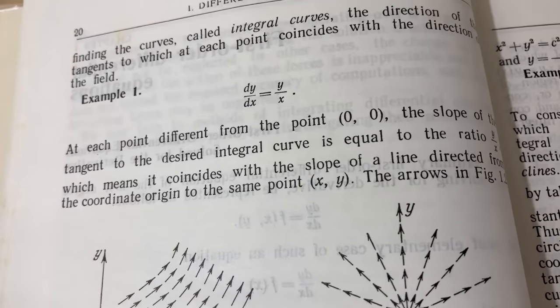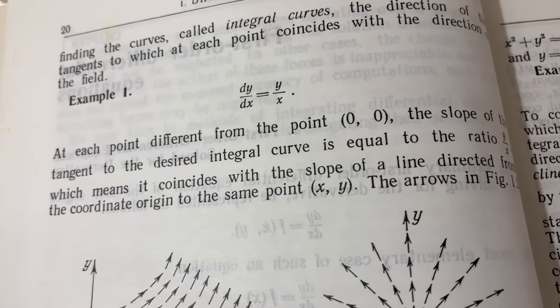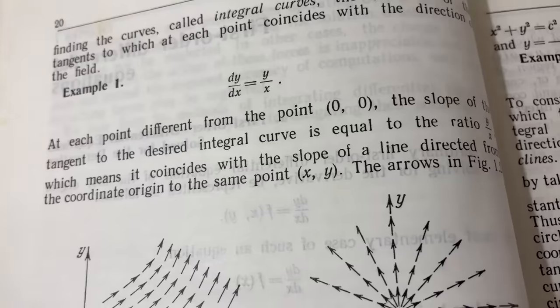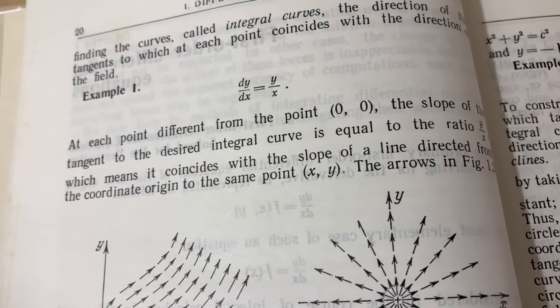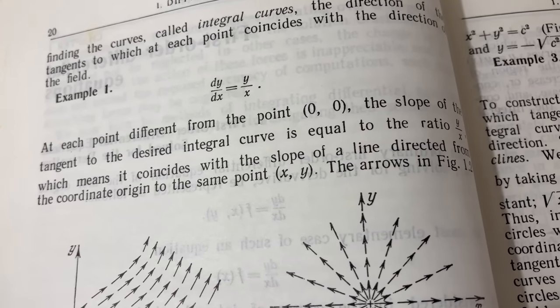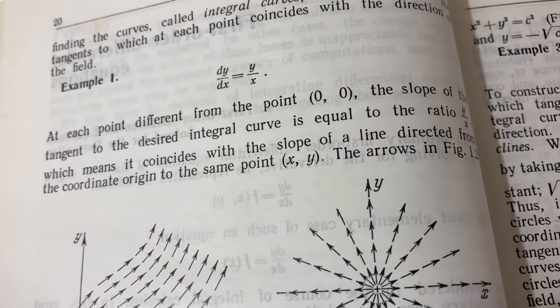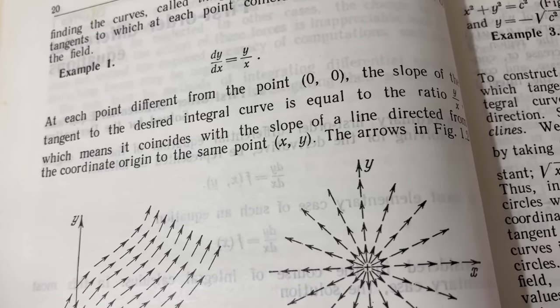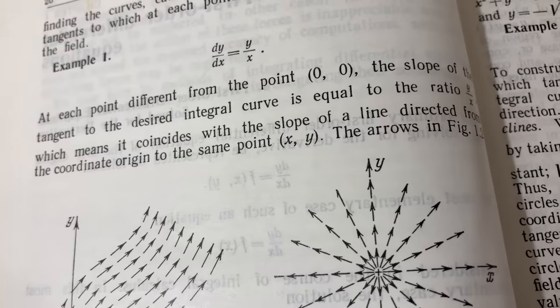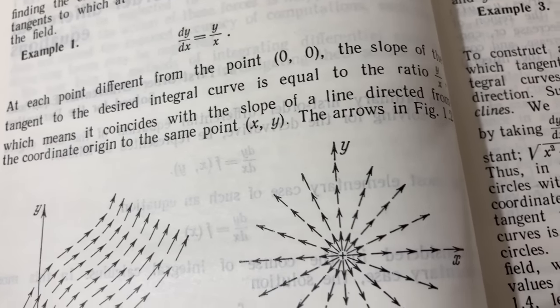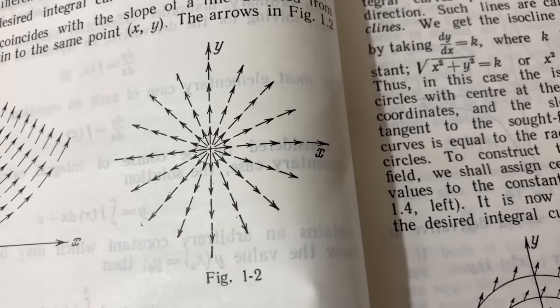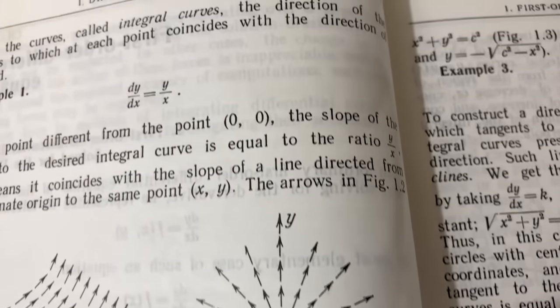Here's the first example in the actual book. They tell us that dy/dx is equal to y over x. It says that at each point different from (0, 0), the slope of the tangent line to the integral curve is the ratio y over x. Which basically means that these slopes are the same as the slopes of lines that start at the origin to a point (x, y). And here they give you this picture here, which describes the integral curves of this differential equation.